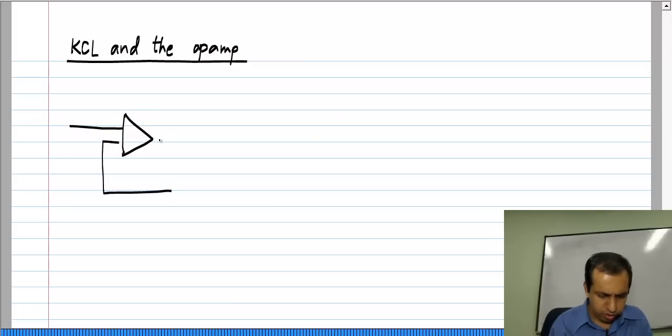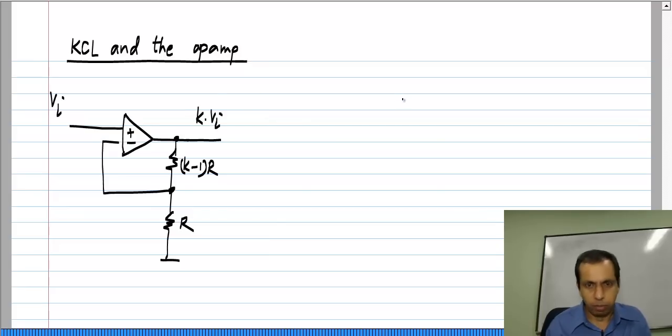Let me take our usual amplifier circuit. If I have an input voltage Vi and this is K minus 1 R and R, the output will be K times Vi with an ideal op amp, and with a real op amp with a finite but very large gain it will be close to this.